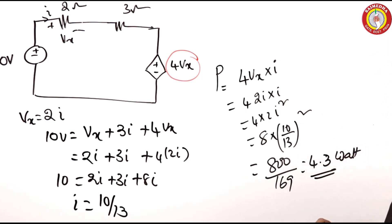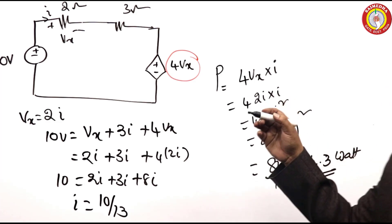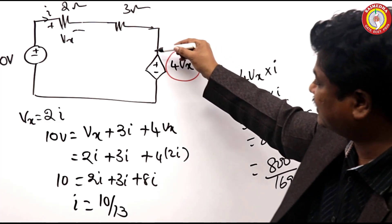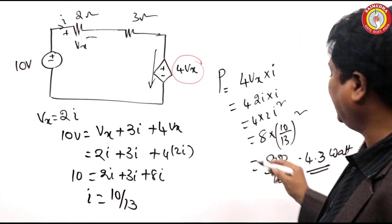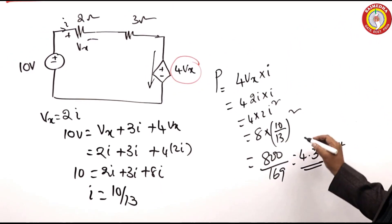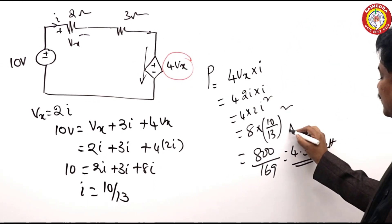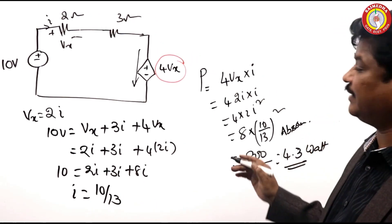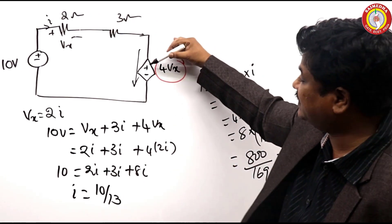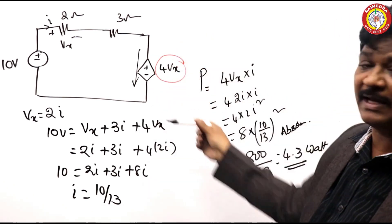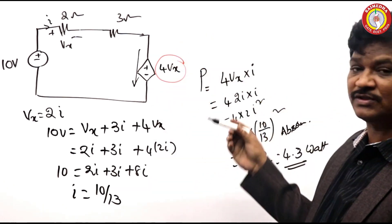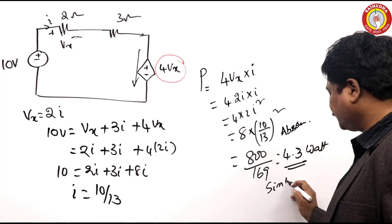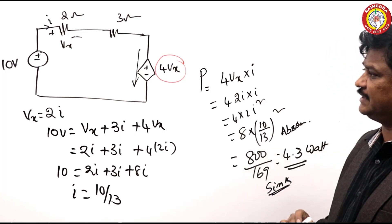This is the amount of power which is delivered or absorbed. The current is flowing in this direction, hence 4.73 watts of power is being absorbed - it is not delivering. Suppose this were minus and plus, if current is coming like this, that is delivery. Now it acts like a sink.